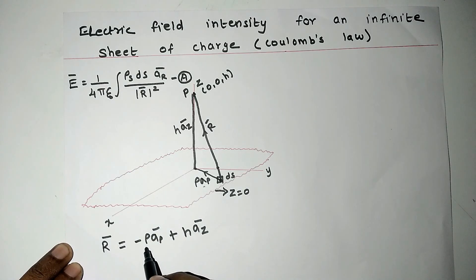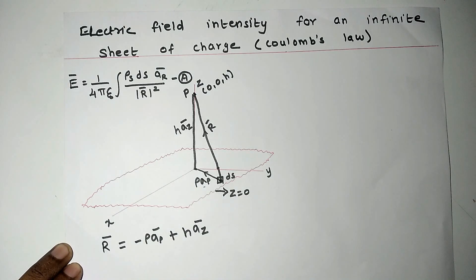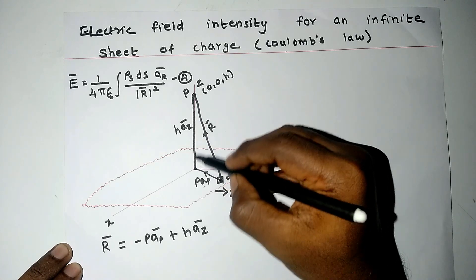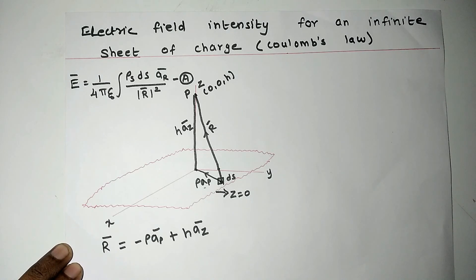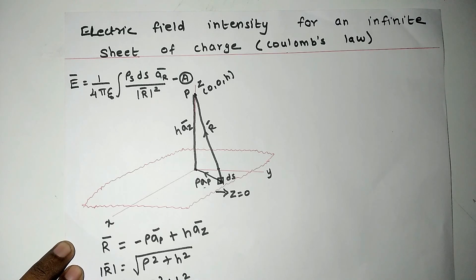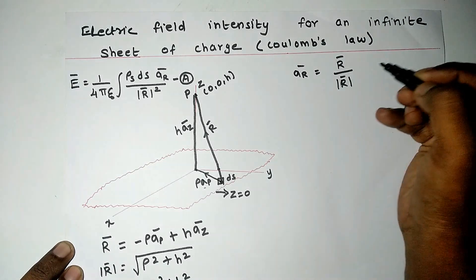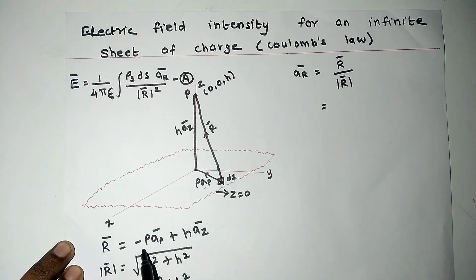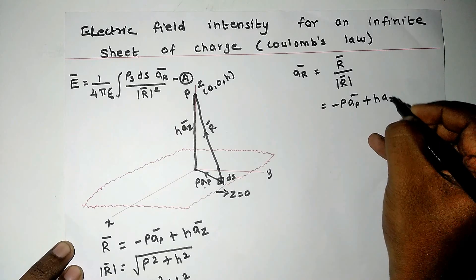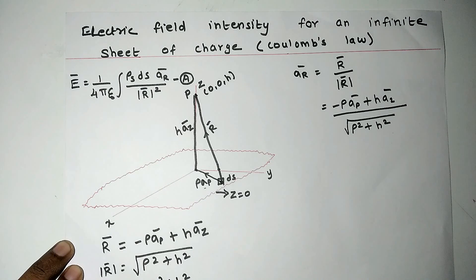A negative symbol has been used because when we move from ds to the origin, the value of ρ is going to decrease. When we move from the origin towards point P, the value of h is going to increase, so we use a plus symbol there. The modulus of r vector equals √(ρ² + h²), and modulus of r vector squared equals ρ² + h². The unit vector a_r equals r vector divided by modulus of r vector, which is (−ρ·a_ρ + h·a_z) divided by √(ρ² + h²).